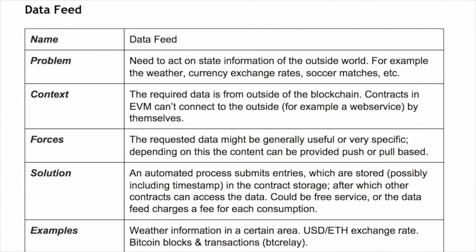You can also do a freemium model: provide the data but introduce some kind of error in it. If people pay, then you remove the error. That's an interesting one. For example, guarantee the weather plus or minus five degrees or something — or always return the weather in the North Pole.